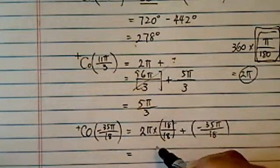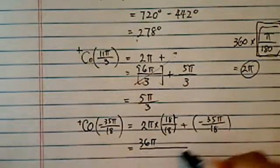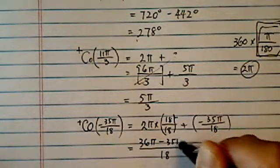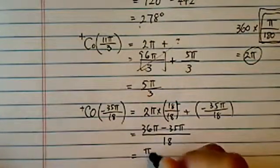And then here, I have 36, right? 36 pi over 18. And I'm going to subtract my 35. So my coterminal angle, positive coterminal, is pi over 18. See? That's not too bad.